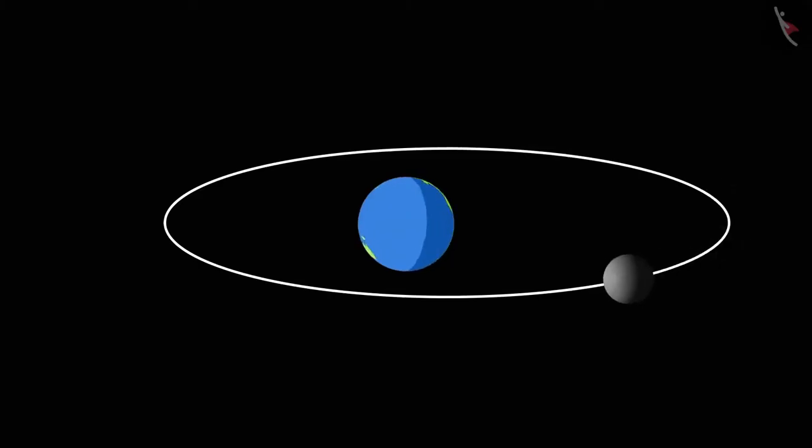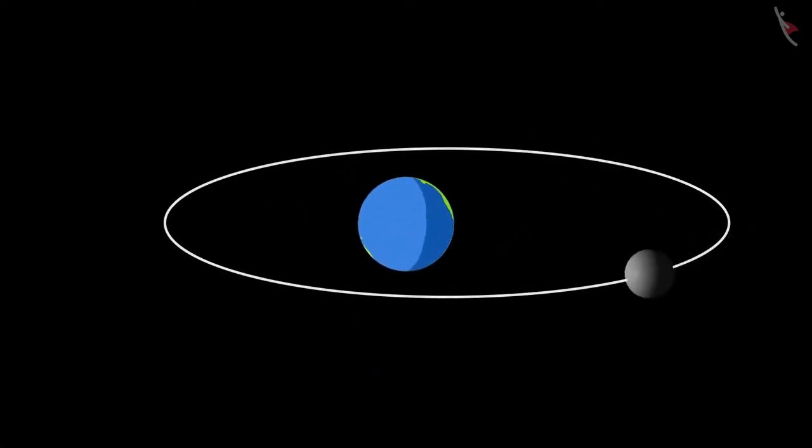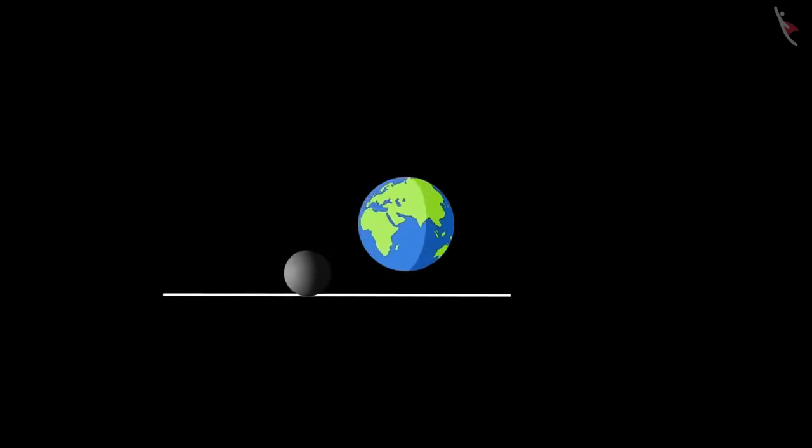One of the examples of centripetal force is the motion of the moon around the earth. The moon orbits around the earth due to the centripetal force provided by the gravitational force of the earth. A lack of centripetal force would put the moon in a uniform straight line motion. Bye-bye moon.